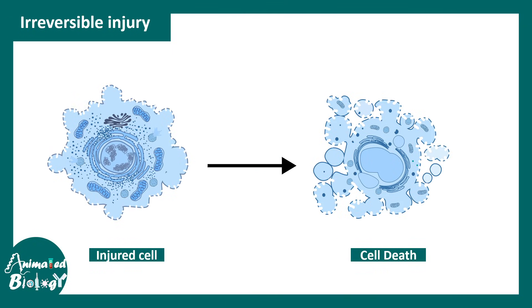In case of irreversible injury, which is a more advanced stage, it leads to nuclear degradation. There are different stages of nuclear changes, including nuclear degradation, condensation, and fragmentation of the genome. There could also be rupture of the lysosome, which leads to bursting of all lysosomal contents into the cytoplasm, which can be detrimental for cellular physiology.